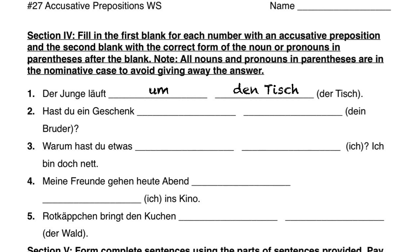Nummer zwei: 'Hast du ein Geschenk blank blank?' — Do you have a gift for your brother? We need für, meaning 'for,' and then deinen Bruder — using the accusative masculine deinen ending. Hast du ein Geschenk für deinen Bruder? Do you have a gift for your brother?